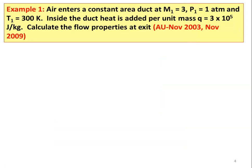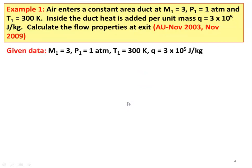Example number 1: Air enters a constant area duct with Mach number M1 equal to 3, pressure P1 equal to 1 atmosphere, and temperature T1 equal to 300 Kelvin. Inside the duct, the heat added per unit mass Q equal to 3 × 10⁵ Joules per kilogram. Calculate the flow properties at the exit. This is from the November 2003 and November 2009 question papers. Given: M1=3, P1=1 atm, T1=300 K, Q=3×10⁵ J/kg.